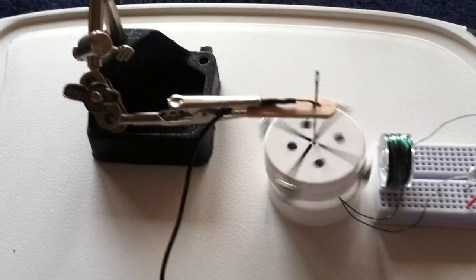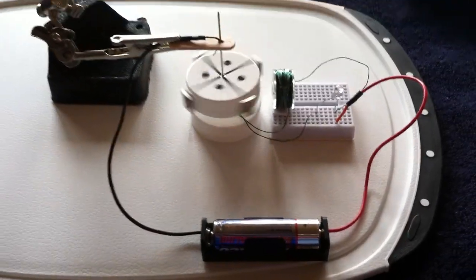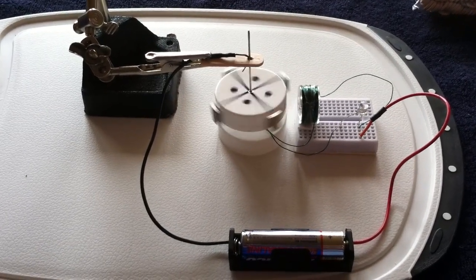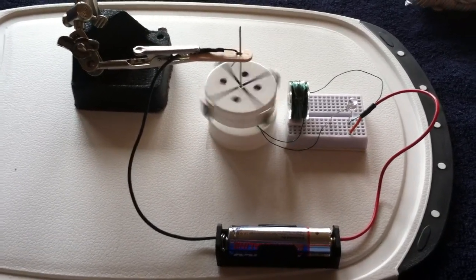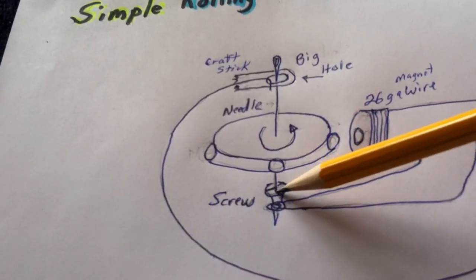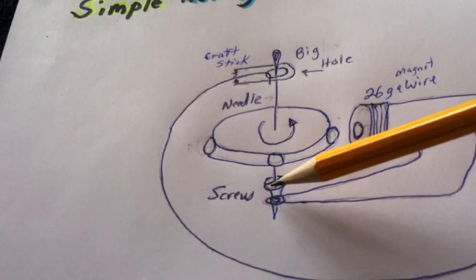That's all there is to it. It's just a simple electric motor with no reed switch, no commutator, just the steel needle. The steel needle is making contact with either steel or brass screw.